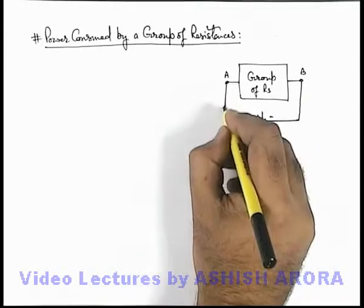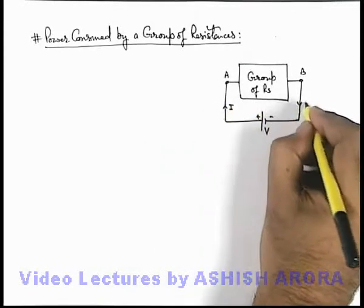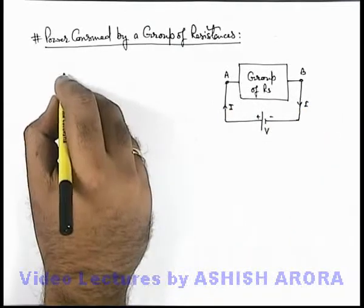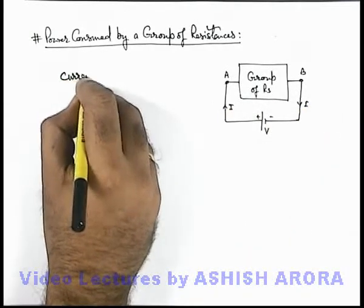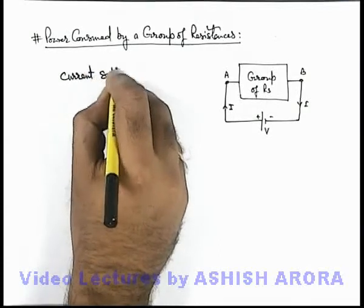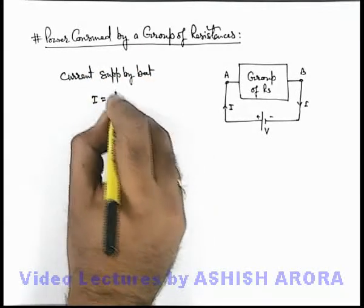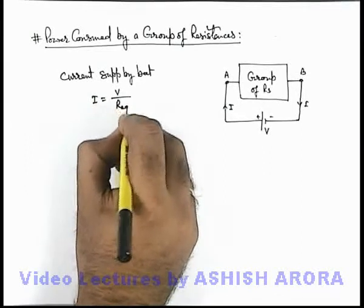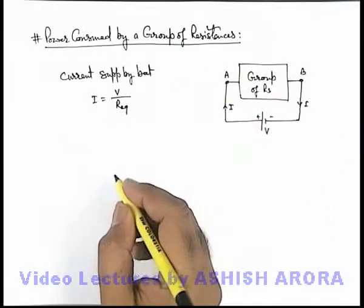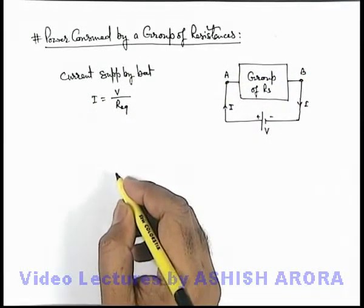Now in this situation, say the battery supplies a current I. In this situation we can directly write current supplied by battery. This can be written as I equals V by R equivalent, if R equivalent is the equivalent resistance for the group of resistances.